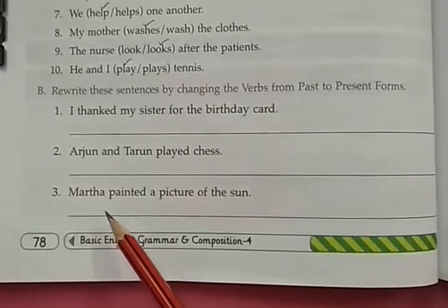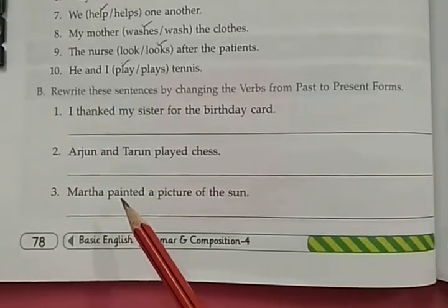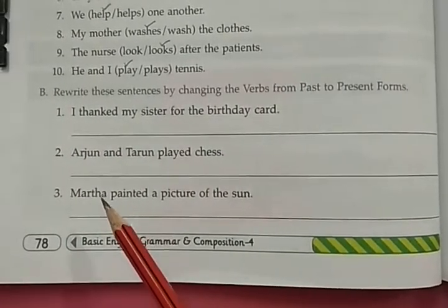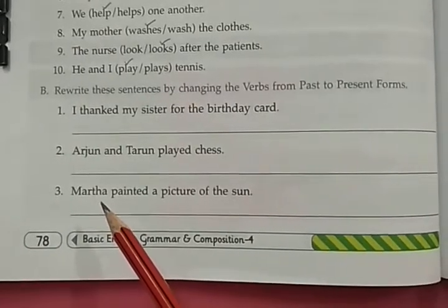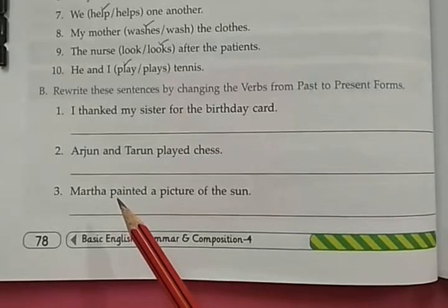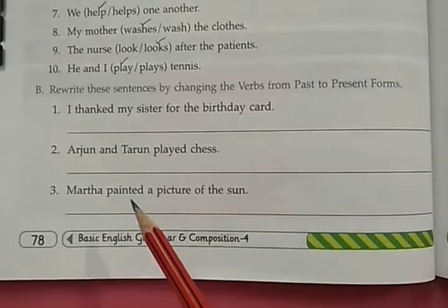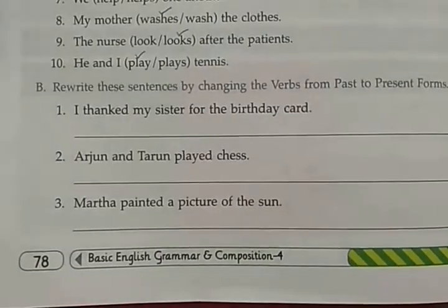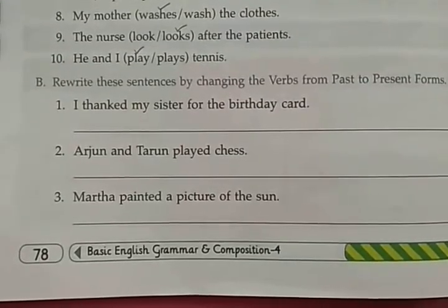Next: Maytha painted a picture of the sun. 'Painted' is the second form of verb, so you have to change it. Maytha is singular — it's a name — so we will add S to the first form of the verb. The answer is: Maytha paints a picture of the sun. You have to complete this exercise.